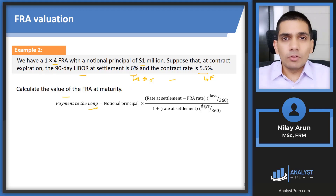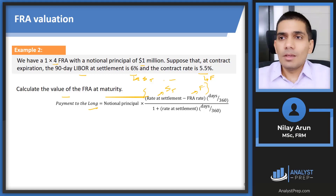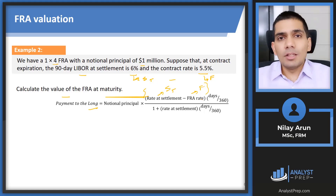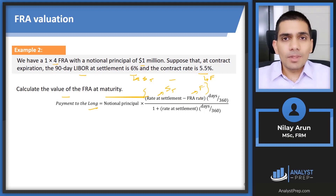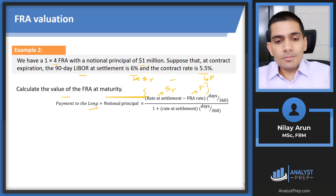Let's see why we don't need to memorize this formula. The numerator (rate at settlement − FRA rate) is simply your ST minus F — the same as a regular forward payoff. Multiplying by days/360 de-annualizes the rate for the exact loan period. Multiplying by notional principal converts the percentage to a dollar amount. The denominator discounts back from the loan end date to the FRA expiration. This all flows naturally from the timeline.